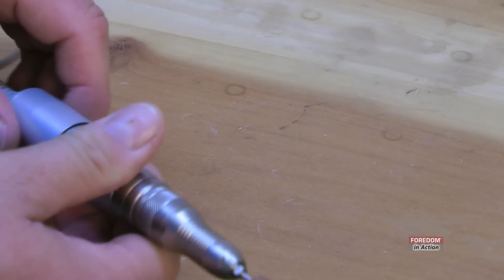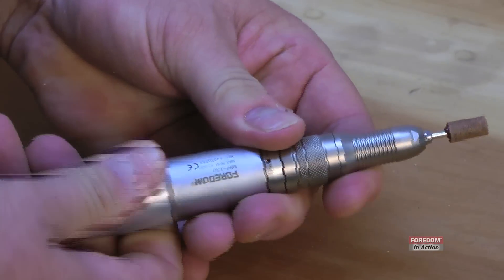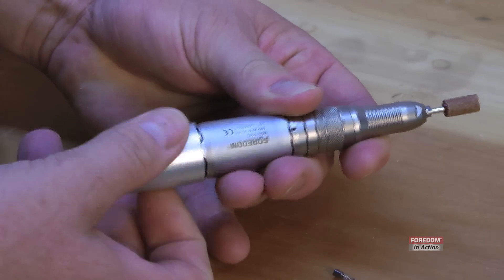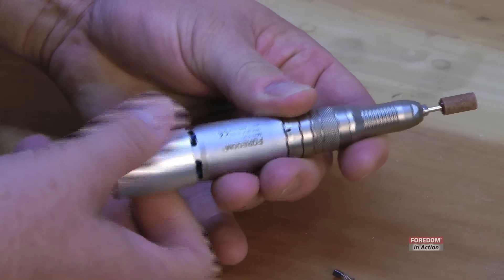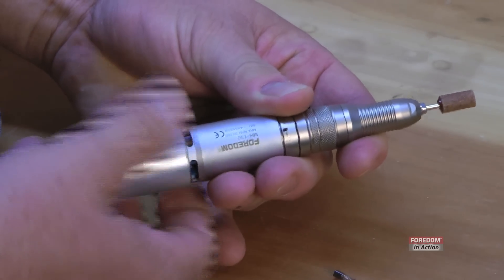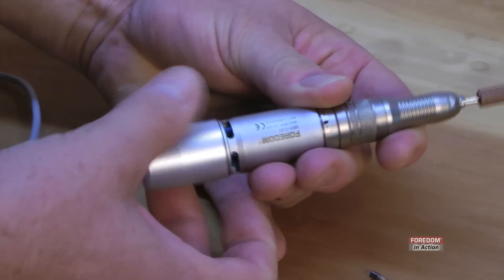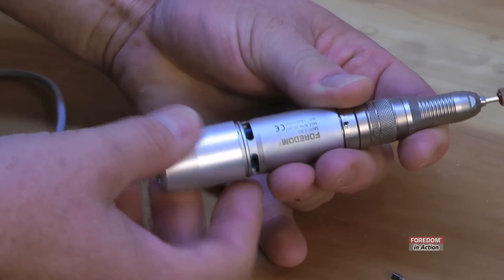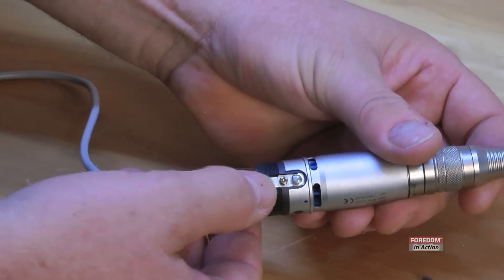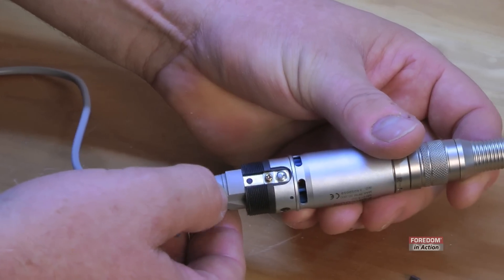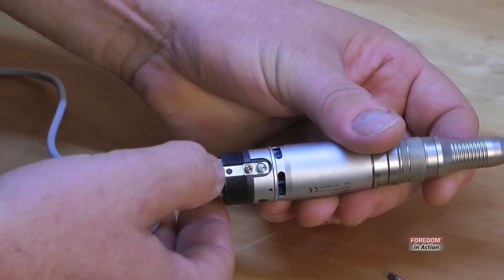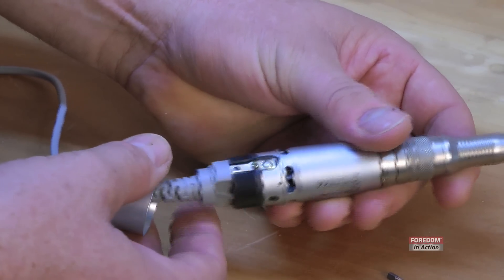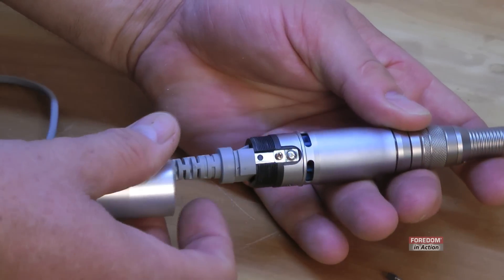Make sure that the motor is unplugged. Twist off the back end cap. And there's your motor brush. All you have to do is unscrew with a small Phillips screwdriver and replace them. There's two of them. Replace them both at the same time.